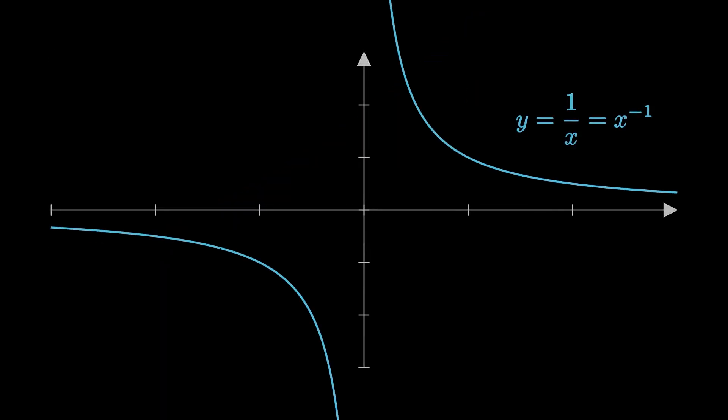Except for one case, the hyperbola. This is a graph of the function, f of x is equal to 1 over x, or x to the negative 1. But if we use our formula, we end up dividing by 0, x to the 0 over 0.